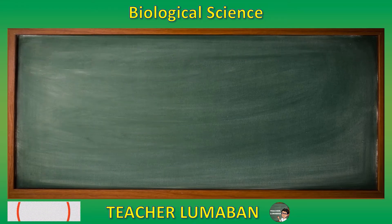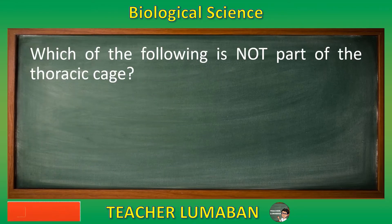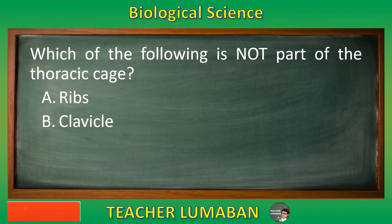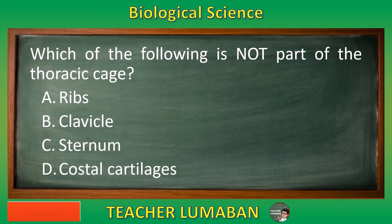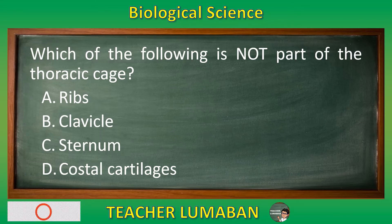Which of the following is not part of the thoracic cage? Letter A: Ribs. Letter B: Clavicle. Letter C: Sternum. Letter D: Costal cartilages. Choose the suitable answer based on the given choices in 5 seconds.